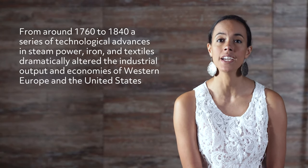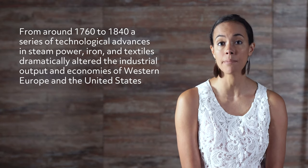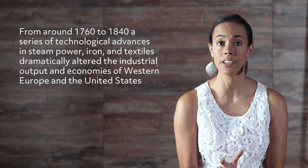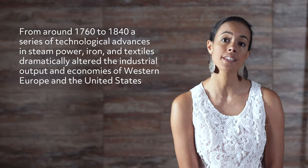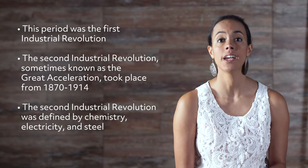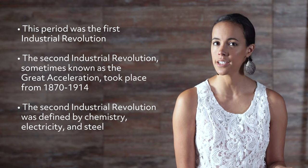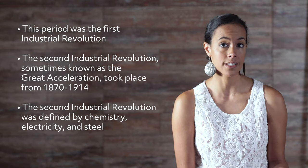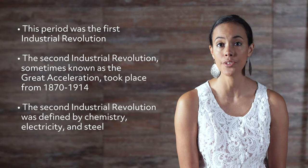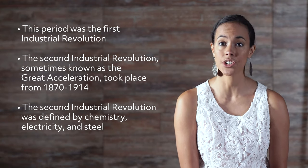So what was the Industrial Revolution, and when and where did it occur? Put simply, from around 1760 to 1840, a series of technological advances in steam power, iron, and textiles dramatically altered the industrial output and economies of Western Europe and the United States. Historians tend to refer to this period as the First Industrial Revolution. The Second Industrial Revolution, sometimes known as the Great Acceleration, took place from 1870 to 1914 and was defined by chemistry, electricity, and steel. Depending on who you ask, we are either presently in the Third Industrial Revolution or just about to enter the Fourth.